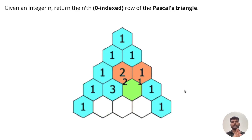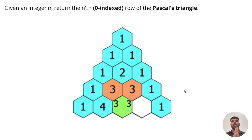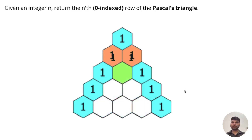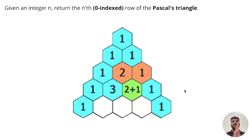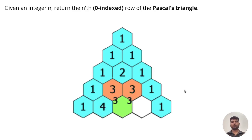Let me explain the problem statement, which is given on the screen. Given an integer n, we need to return the nth row of Pascal's Triangle. This problem is different from the previous Pascal's Triangle problem where we needed to return all n rows — here we just need to return the nth row.